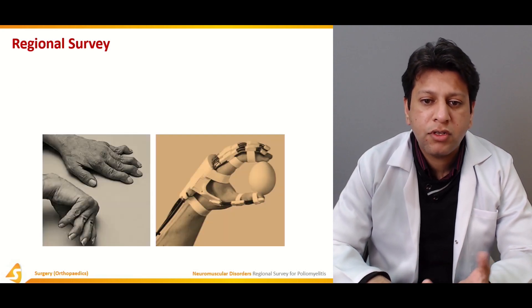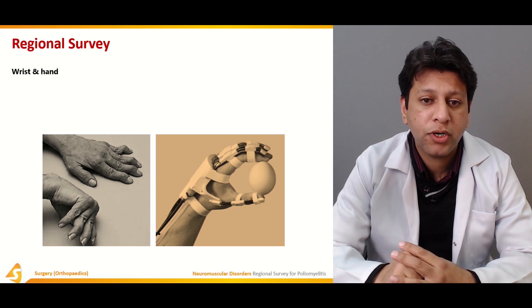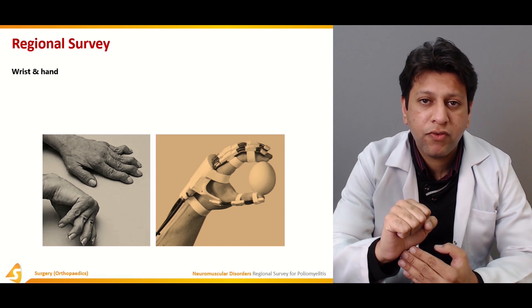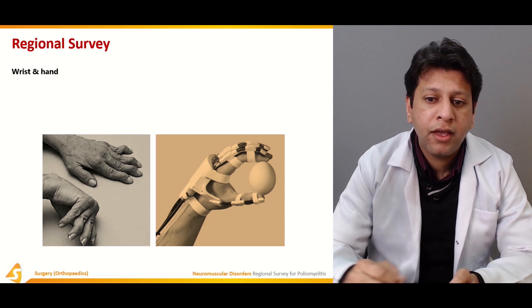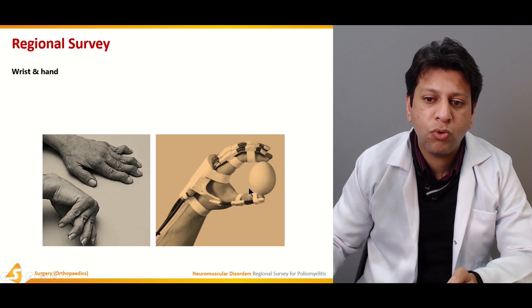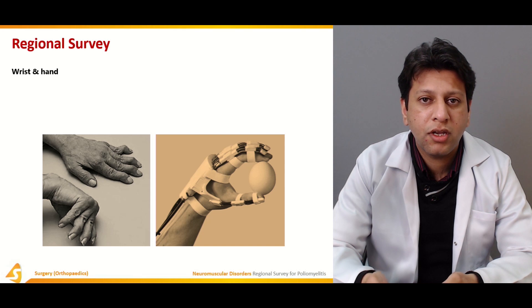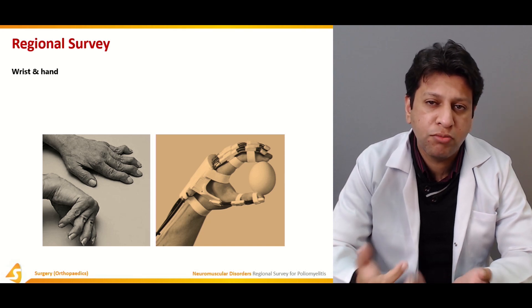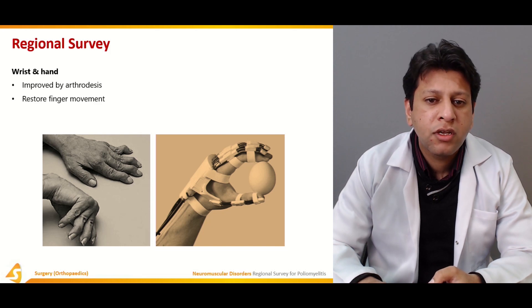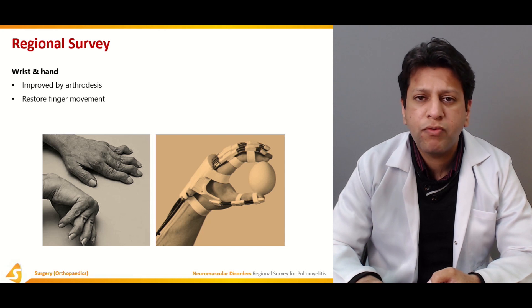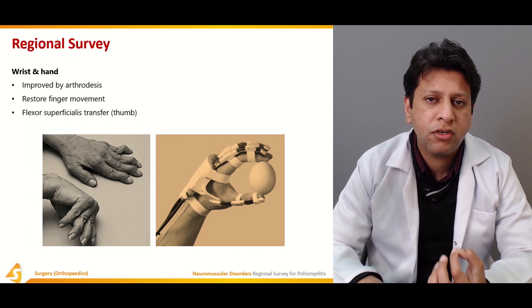Coming to the hand and wrist joint, the most important function is that of the thumb — pinch and grip are both important. If the patient is able to make a grip or fist, hand function is broadly normal, but a pinch is needed so the patient can hold objects. As shown in the diagram, the patient is holding an egg between two fingers — this pinch function is very important. Grip function of the non-dominant hand is used for hygiene purposes or lifting. Finger movement is sometimes restorable but most of the time we have to go for arthrodesis. Flexor digitorum superficialis transfer is done only when there is no flexion for the pinch function of the thumb.